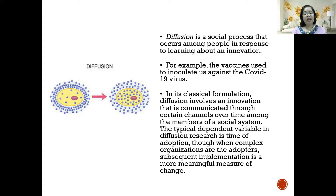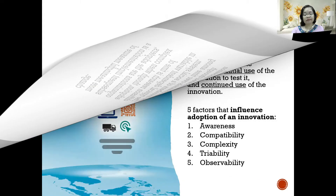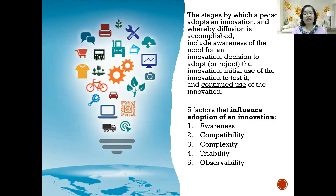The typical dependent variable in diffusion research is time of adoption, though when complex organizations are the adopters, subsequent implementation is a more meaningful measure of change. The theory further tells us the stages by which a person adopts an innovation include: awareness of the need for an innovation, the decision to adopt or reject the innovation, the initial use of the innovation to test it, and its continued use. The best example here is the cell phone.